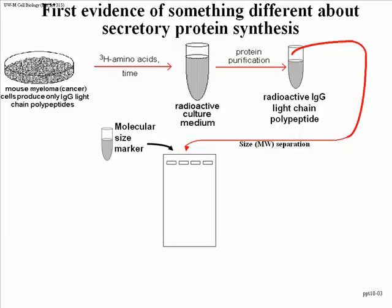Molecular size markers of known molecular weight go into the first lane, and we run the electrophoresis and stain the gel for proteins. You see five or six marker proteins of known molecular weight, and a protein from the medium also migrating there. A small amount was made radioactive to show these cells are synthesizing IgG before harvesting the medium. The cells have been growing in the medium for quite a while and produced enough IgG to be picked up by stain. The small radioactive amount will be detected by autoradiography in a moment.